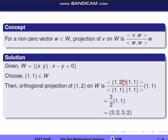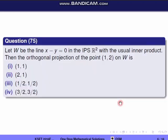We select the non-zero vector (1,1) in W. So the orthogonal projection of (1,2) on W, using the formula: inner product ⟨(1,2),(1,1)⟩ divided by inner product ⟨(1,1),(1,1)⟩, into (1,1). Using the dot product: (1·1 + 2·1)/(1·1 + 1·1) = 3/2. So the projection is (3/2, 3/2). The correct option is the fourth one.